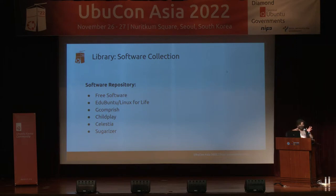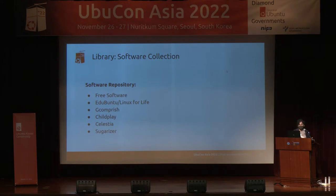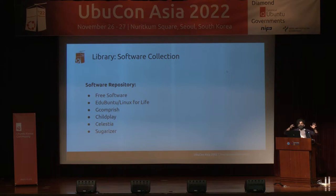These are not just single applications. GCompris has hundreds of applications for small kids in primary class. Childsplay has dozens of activities. Celestia is a library of all celestial objects that you can render — you can create a context like solar eclipse or lunar eclipse, or visit any terrestrial object. When you're teaching about Saturn or Jupiter, you can seamlessly render, move around, create a demo, and use that in the classroom. It's mathematically modeled, so it's very precise and accurate.